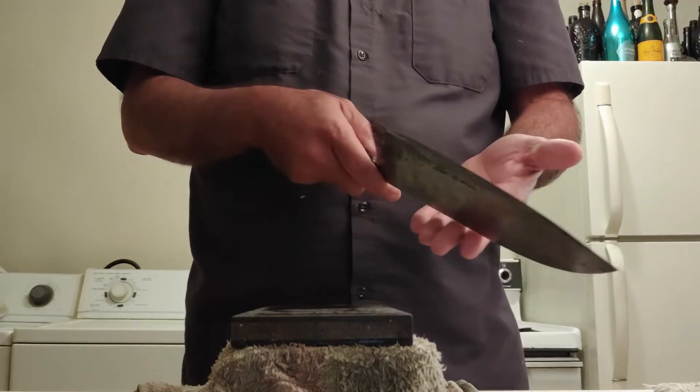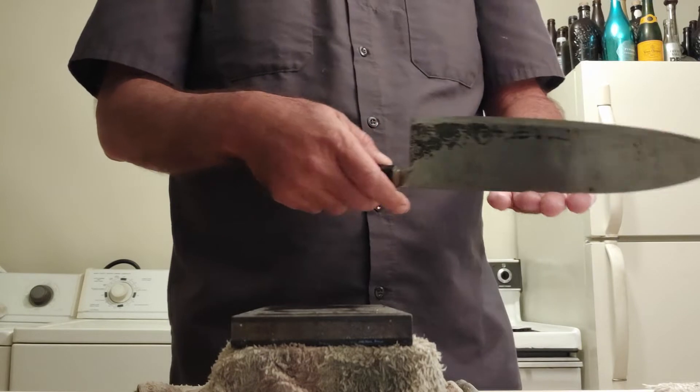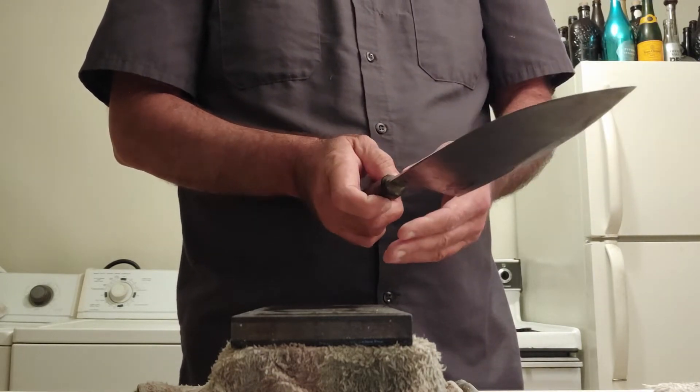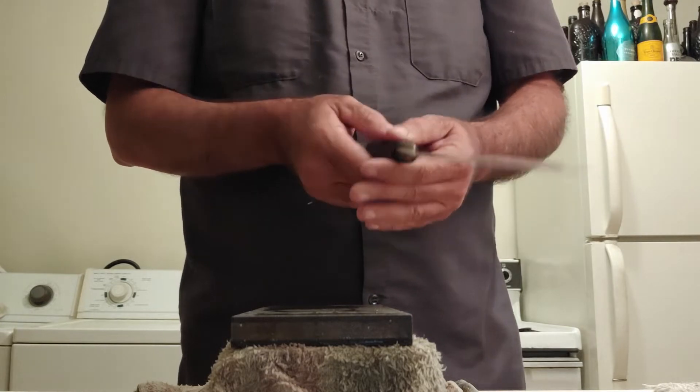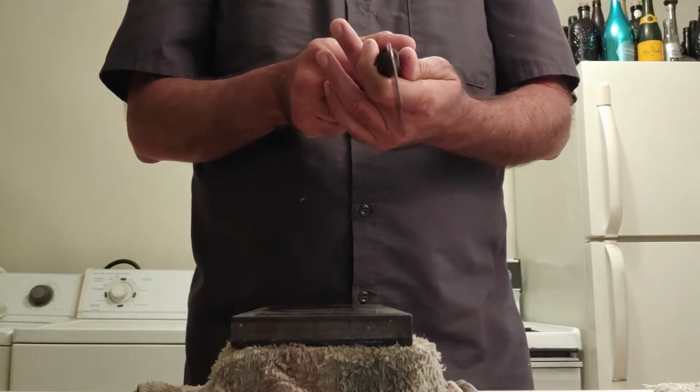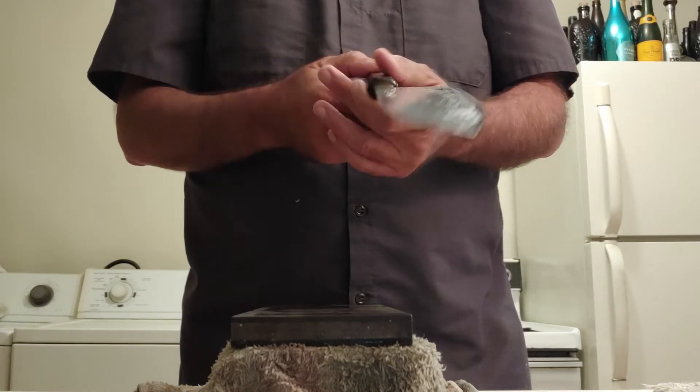Takedas are a bit unusual in the way they're set up, and that is because the sides of the knife are, well, first of all, they are very, very thin overall. Takeda knives are very thin overall.